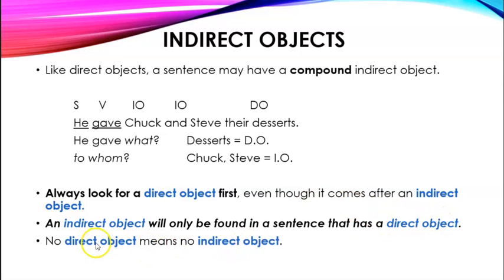No direct object means no indirect object. Again, can't give to Chuck and to Steve something I don't already have, the desserts.